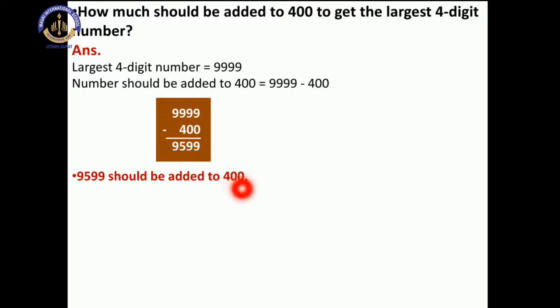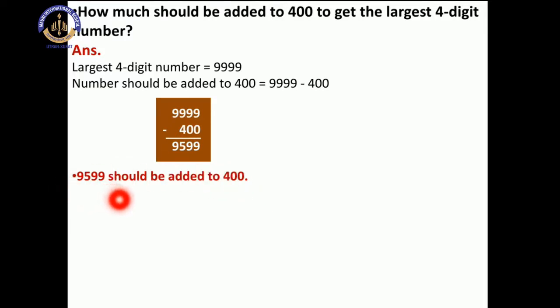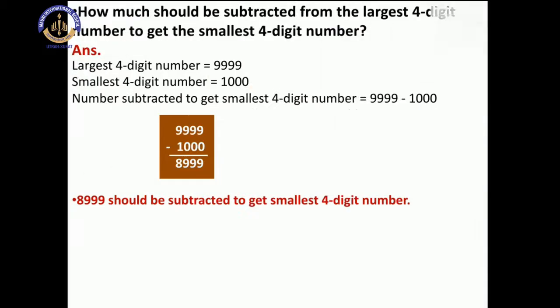If we add 9,599 to 400, we get the largest 4-digit number, that is 9999. Right? Understood all? Very good.